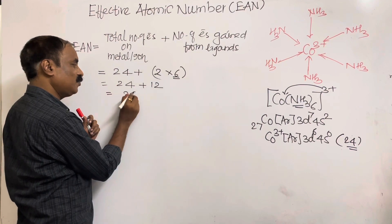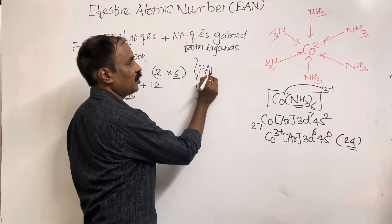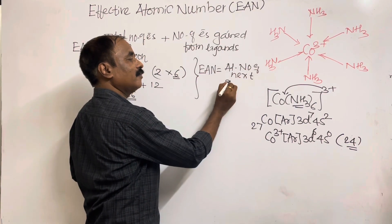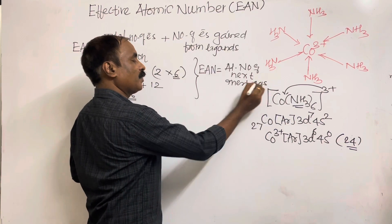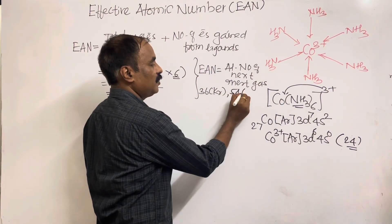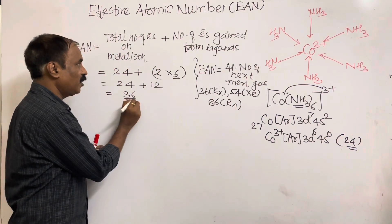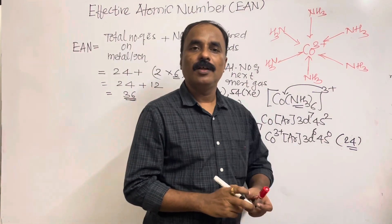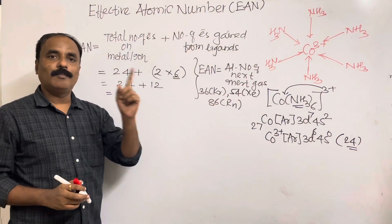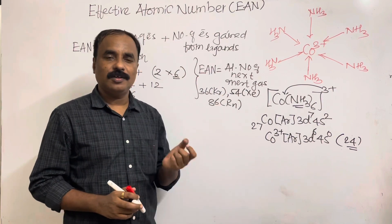The EAN is 36, which equals the atomic number of krypton (Kr = 36). The EAN rule states that if the effective atomic number equals the atomic number of the next inert gas element — 36 (krypton), 54 (xenon), or 86 (radon) — then the complex is stable. If the EAN is not equal to 36, 54, or 86, the complex will not be stable.